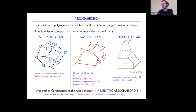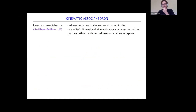The goal of the talk is to try to revisit this construction and explain it in a different way. The kinematic associahedron is an n-dimensional associahedron constructed in the kinematic space, which is a quadratic-dimensional space.